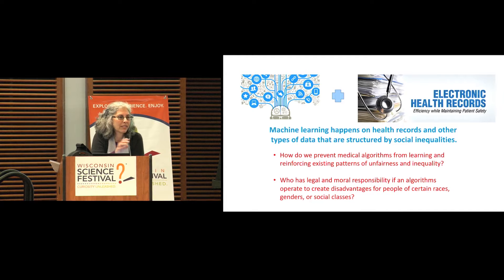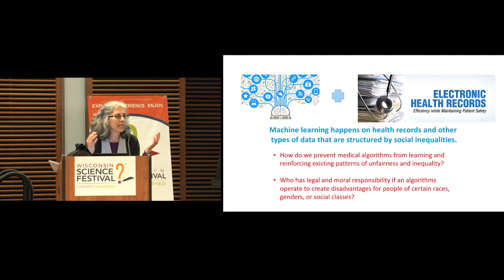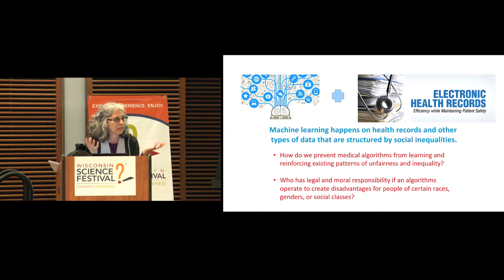The question had to do with algorithms being used in the criminal justice system. There's actually litigation going on right now concerning both their transparency and the biases that might be built into them. It's really the same problem — if you train the algorithm on existing data about who is let go on parole or how long different people are sentenced, and the existing data are very biased, the algorithm might learn that bias. A second problem is that if we don't have access to that algorithm because it's proprietary, other people can't test it and understand its biases and limitations. There is litigation right now concerning judges using these proprietary algorithms.